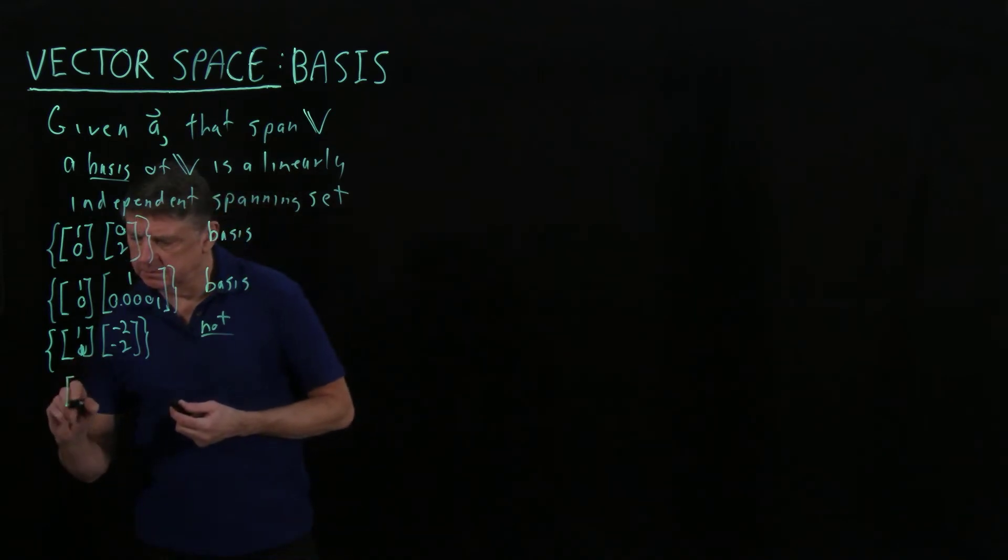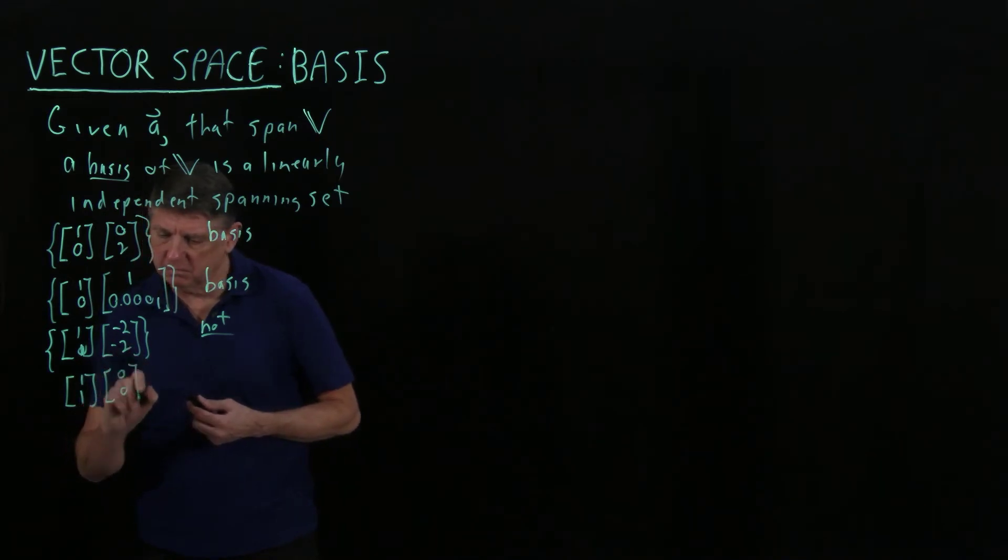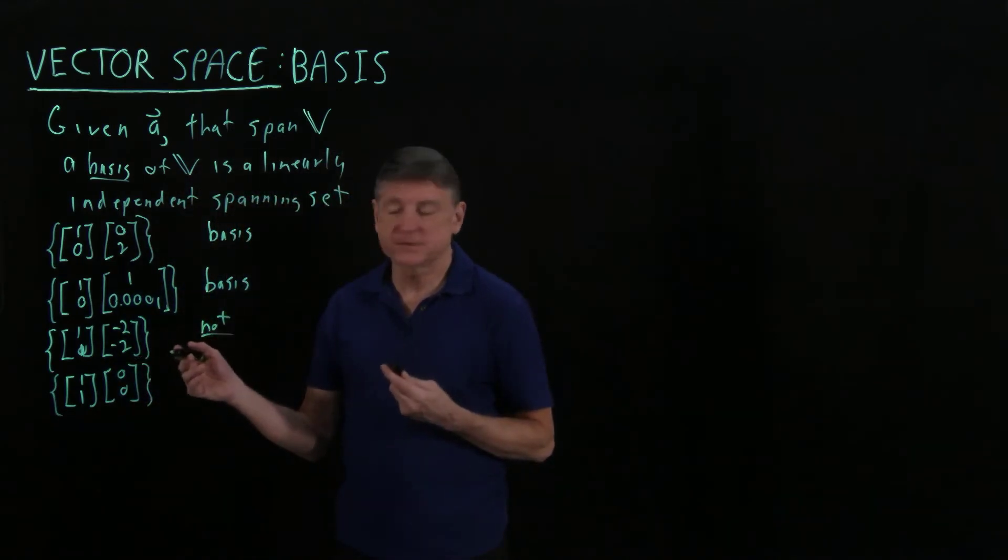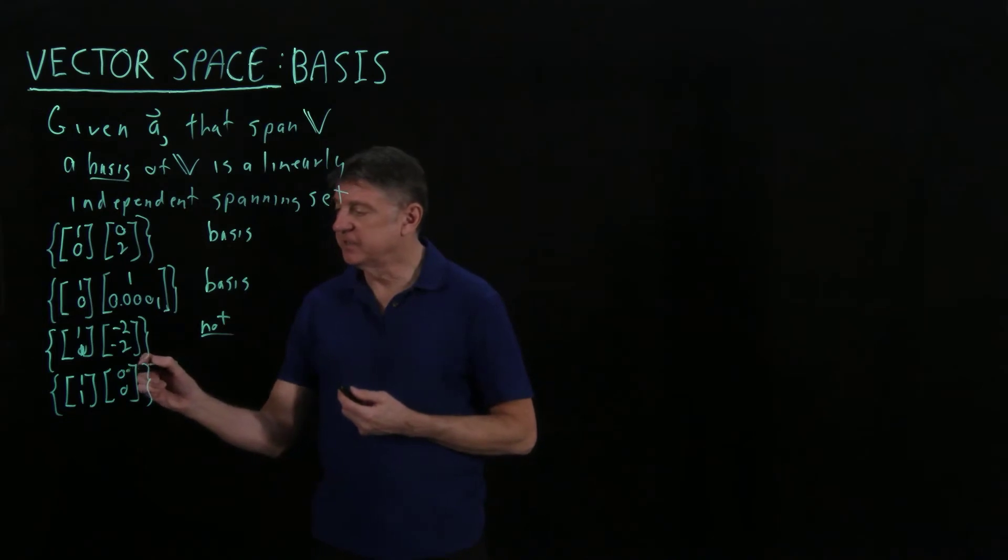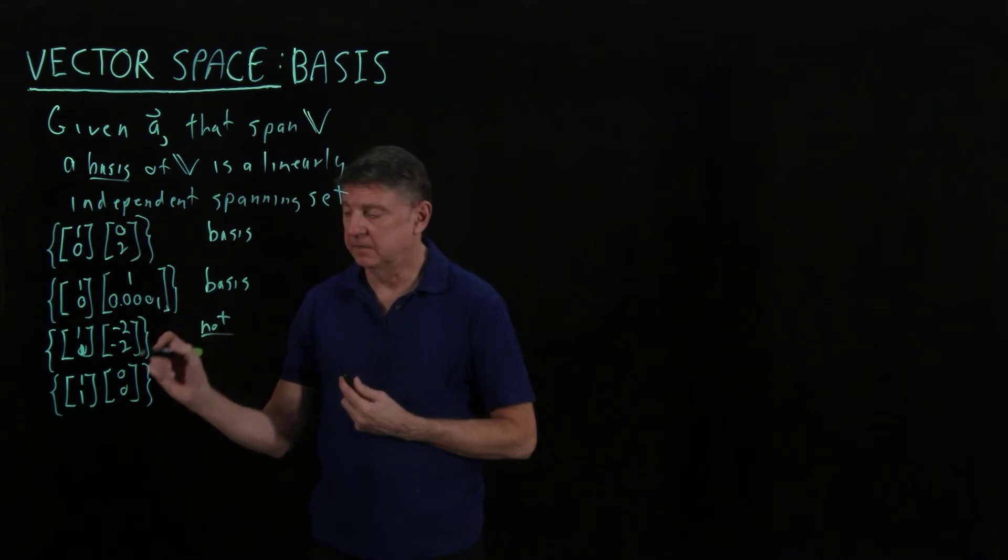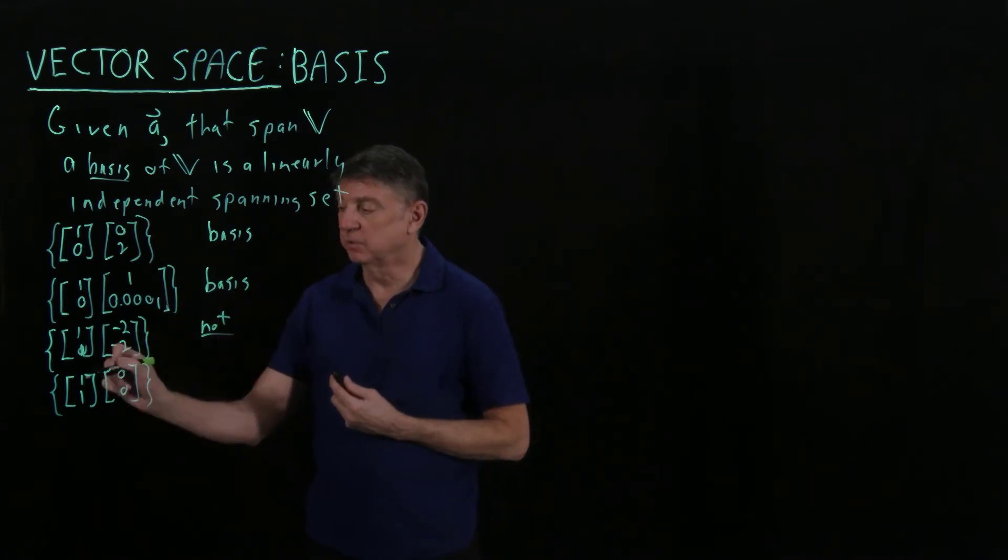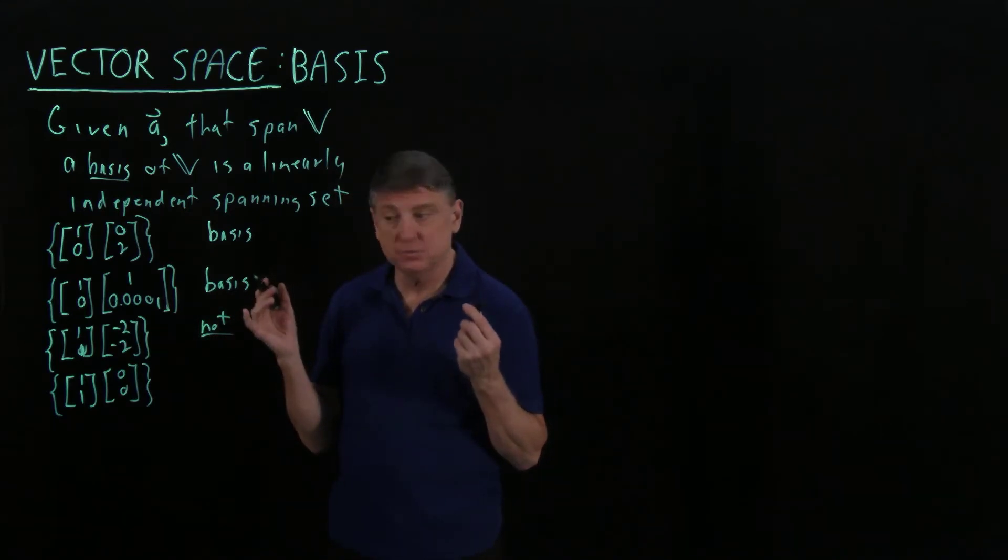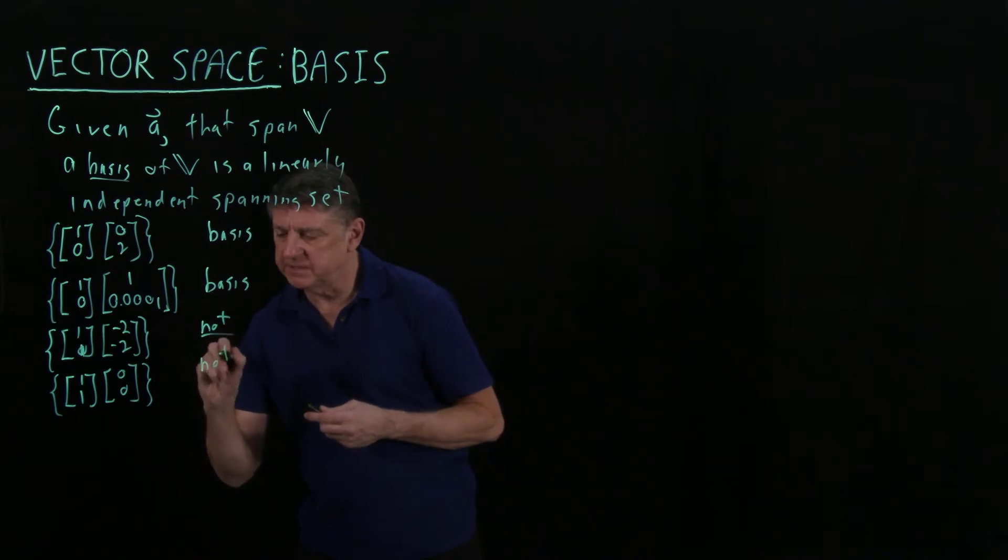Suppose we're given [1, 1] and [0, 0]. Is this a basis for two-dimensional vectors of size 2? The answer is no. 0 is in every vector space, so the only thing that's non-zero is this one, and if there's only 1 and we're trying to get size 2, the numbers don't match up. So that is not a basis.